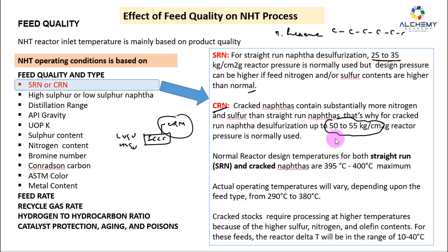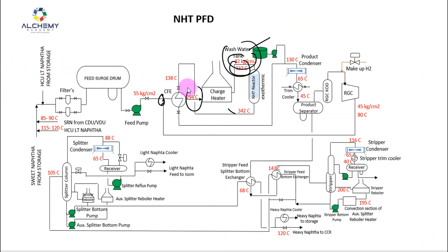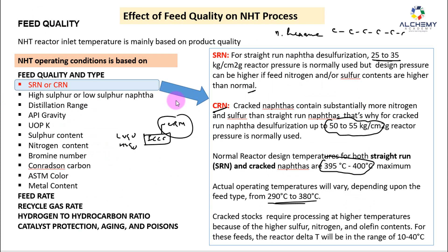Because the severity of reaction increases when processing CRN, the normal rated design temperature for CRN operation is around 395 to 400°C maximum. The operating temperature varies depending on feed type, from 290 to 380°C. If processing CRN we keep higher pressure and higher temperature; if processing SRN it can be lower — around 42 kg/cm² and 335 to 337°C. This is the effect of feed quality on NHT operating conditions.